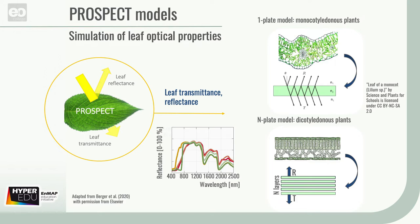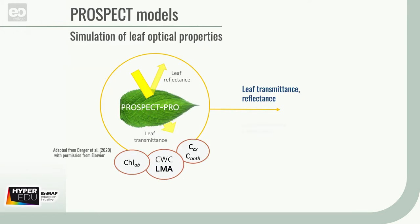Different versions of PROSPECT have been developed with an increasing number of inputs, for example, chlorophyll content, leaf water content, leaf mass per area, and carotenoid and anthocyanin content. The latest version is PROSPECT Pro, splitting leaf mass per area, or LMA for short, into proteins and carbon-based constituents, or CBC for short.